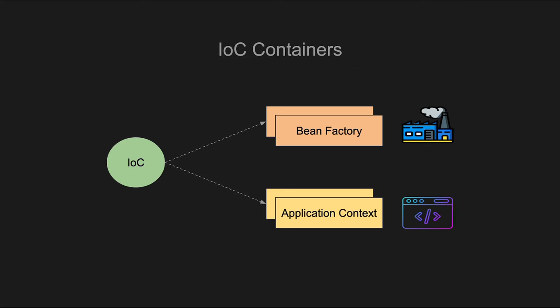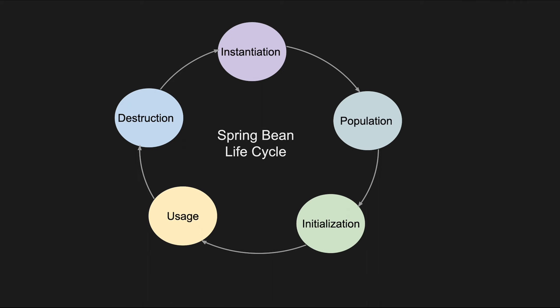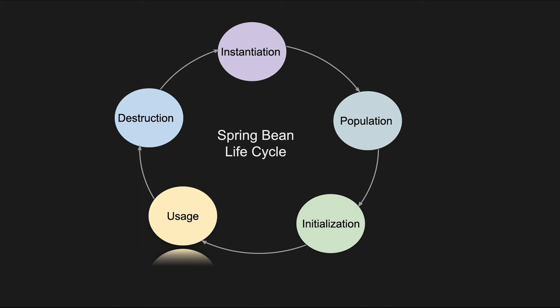In summary, ApplicationContext is a more feature-rich and capable extension of BeanFactory, and the choice between them depends on the specific requirements of the application. Getting back to the lifecycle of a bean in Spring: first, instantiation, in which the bean is created by the Spring IoC container; then dependencies and properties are injected into the bean; then initialization, if the bean implements the InitializingBean interface or defines a custom initialization method, it's called after property population; then the bean is used by the application; and finally, if the bean implements the DisposableBean interface or defines a custom destruction method, it's called when the application shuts down.